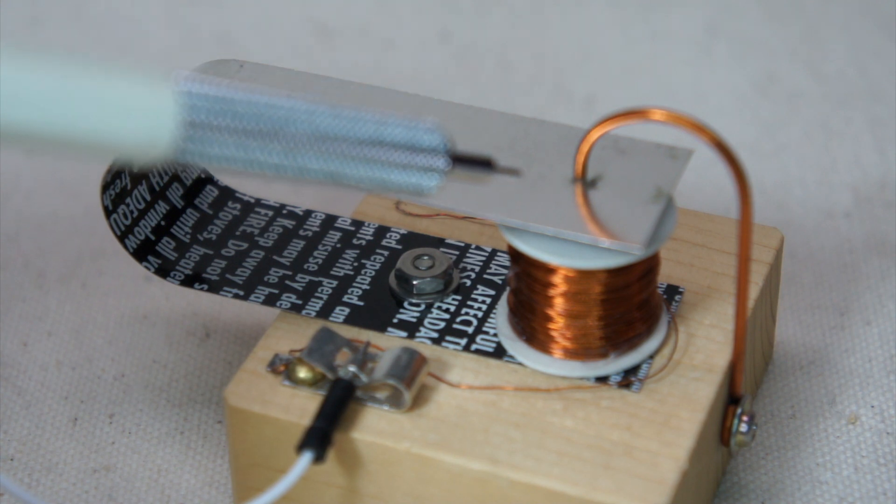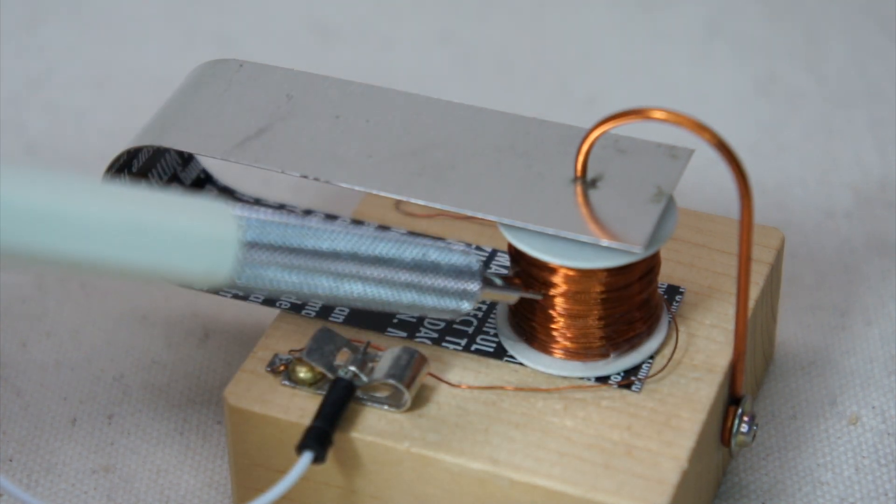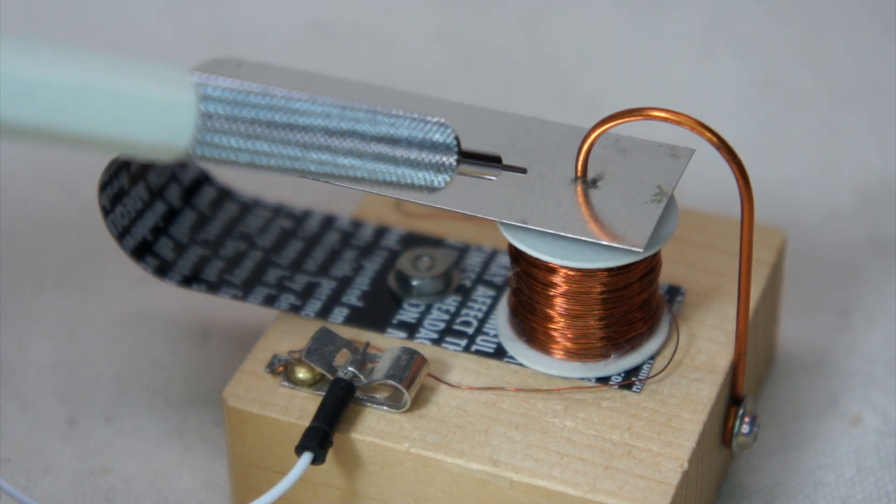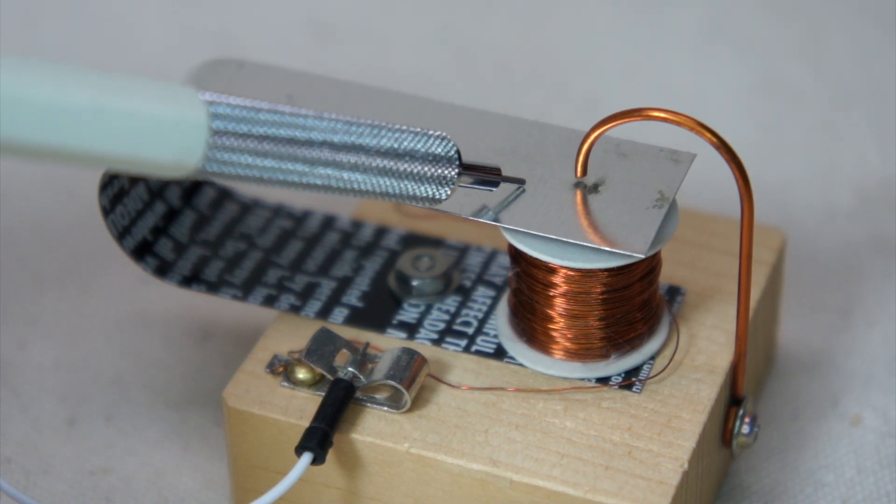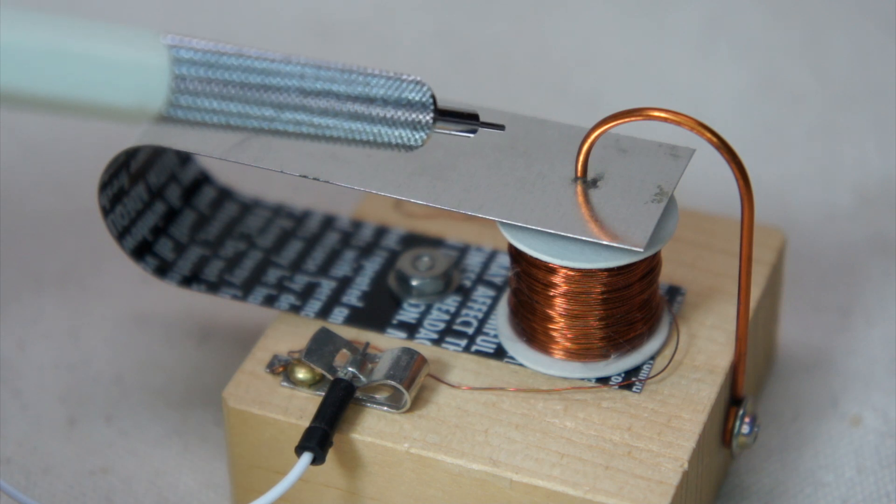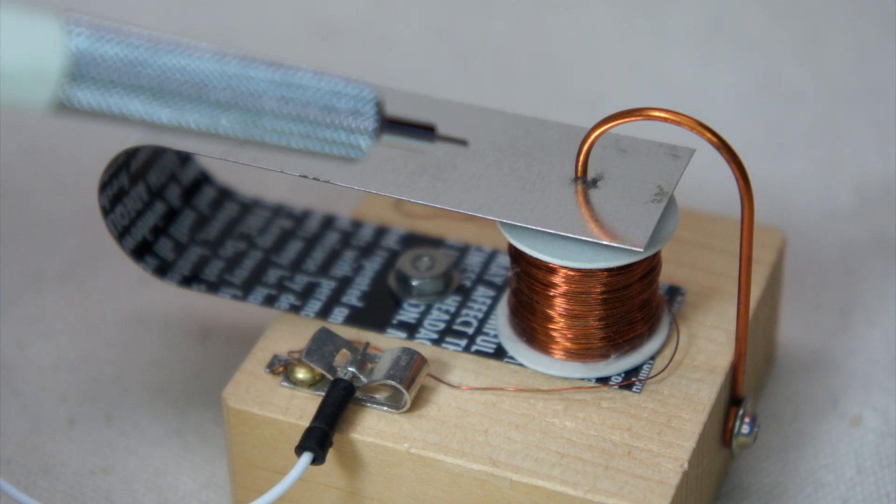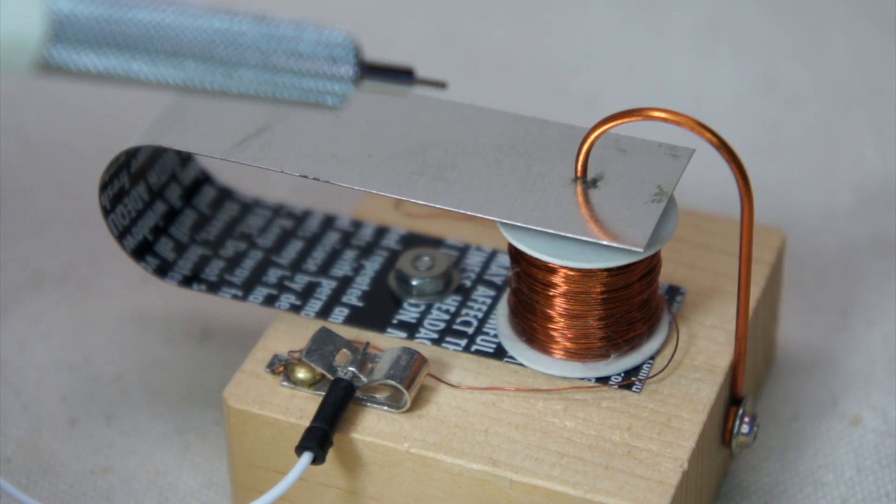So, as the sounder operates, the electromagnet being energized and de-energized, you hear a series of clicks and clacks - click, clack, click, clack. And those clicks and clacks distinguish between dots and dashes.